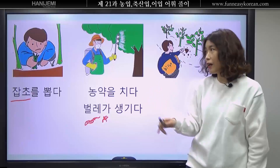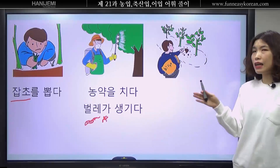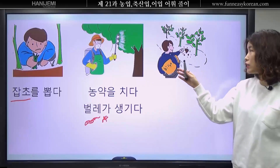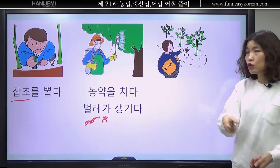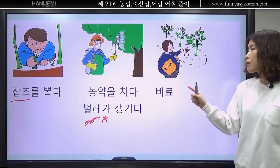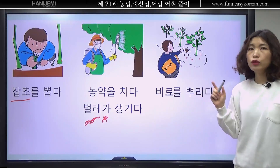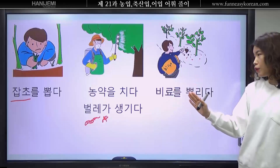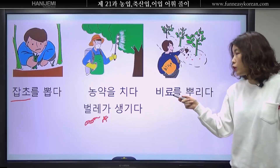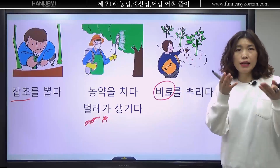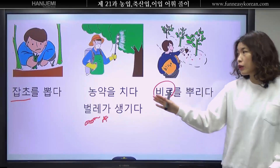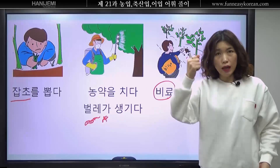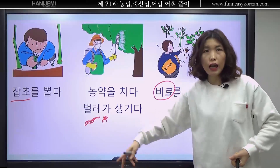그 다음에 땅에 좋은 것을 줍니다. 잘 자라세요, 빨리빨리 키 크세요, 맛있는 열매 많이 열리세요 하고 땅에 좋은 것을 주는데 이게 비료입니다. 비료를 뿌려요. 이렇게 기억하세요: 잡초를 뽑다, 농약을 치다, 비료를 뿌리다. 비료는 잘 자라세요 하고 약 주는 거예요. 농약은 벌레 안 돼요 하고 치는 거예요. 비료와 비슷한 말로 거름이라고도 해요. 거름을 뿌리다 할 수 있습니다.